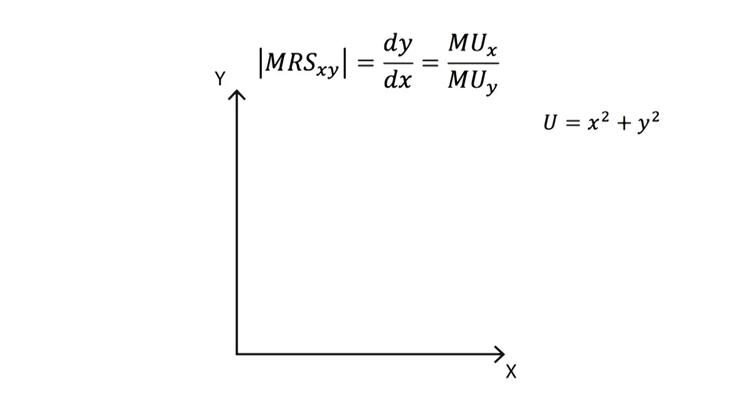Before we graph this function, we will calculate the first derivative in order to verify that the monotonicity axiom is fulfilled. The derivative for x is equal to 2x and the derivative for y is equal to 2y. Since the axiom's met, we know the indifference curve is diminishing.